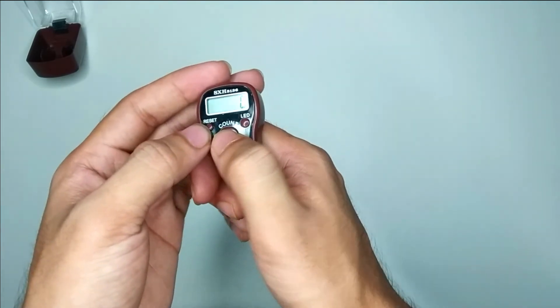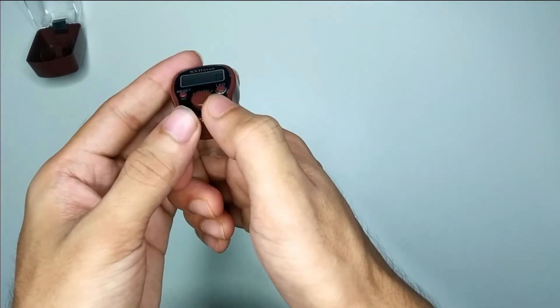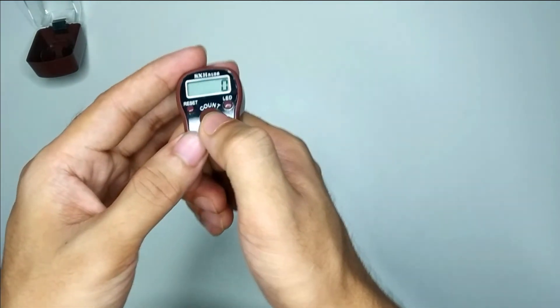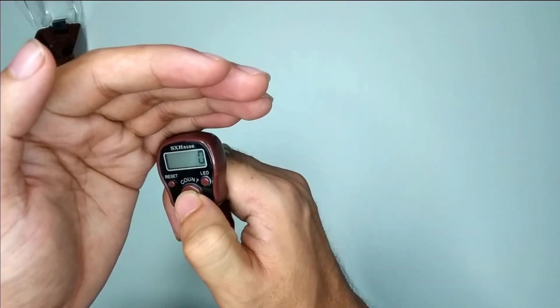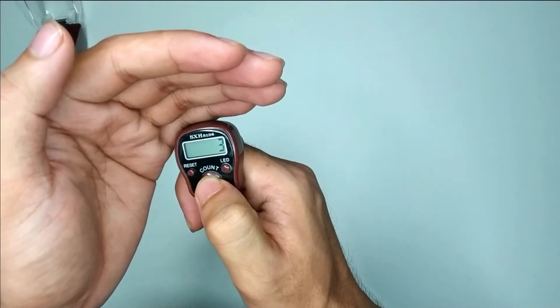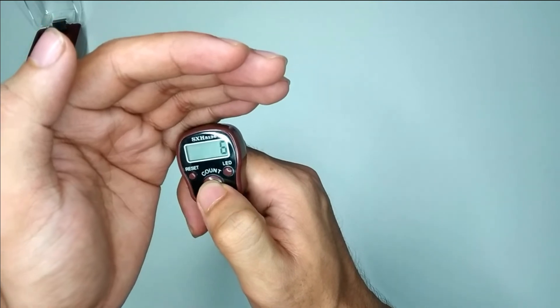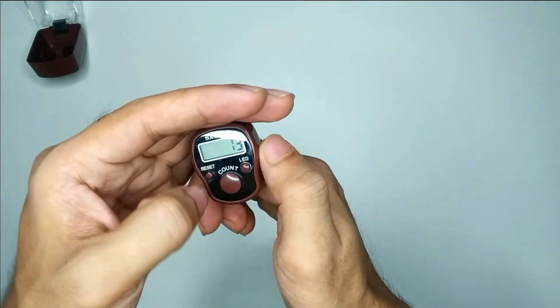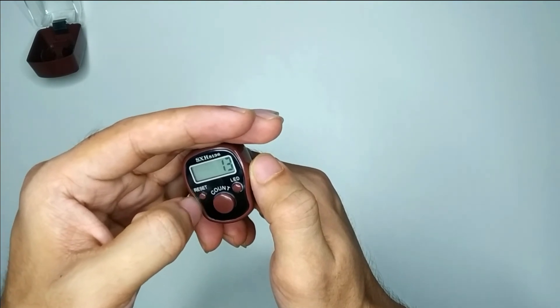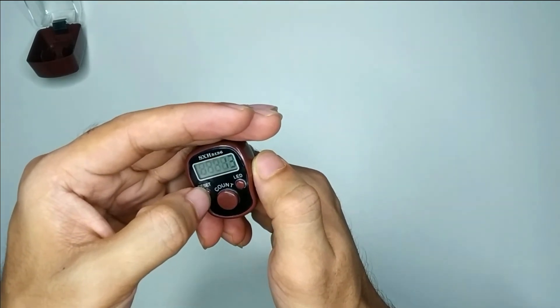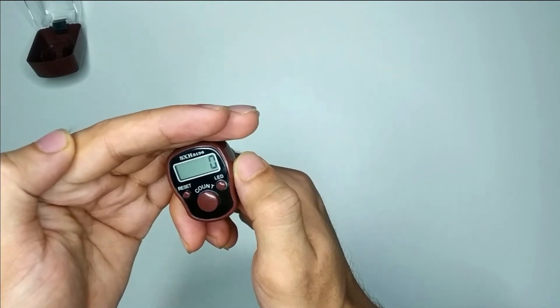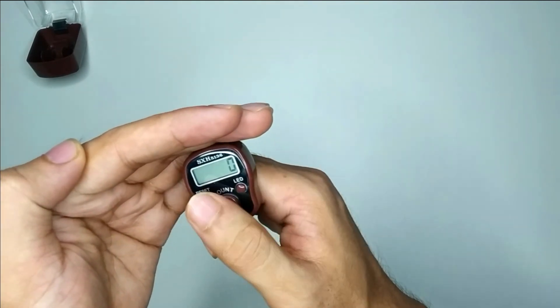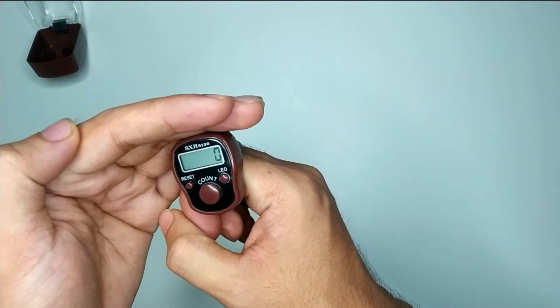The middle button is for counting. If I just press it: two, three, four, five, six, seven, eight, nine, ten. Like that, you can count. After you complete your count, there is a reset option. Just press it and it goes back to zero.